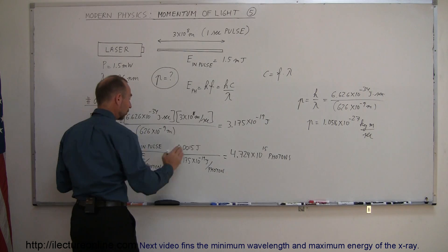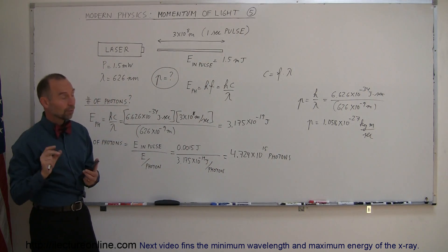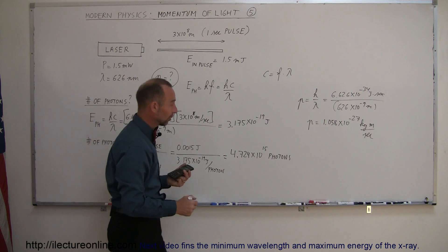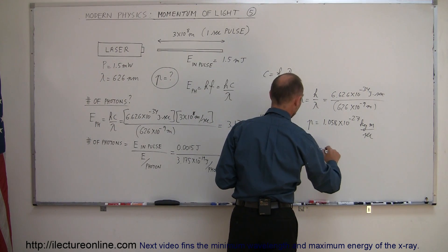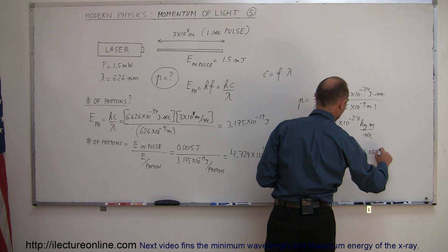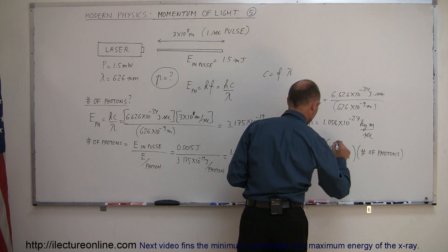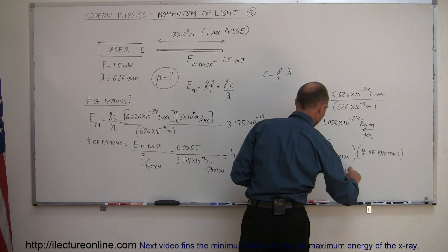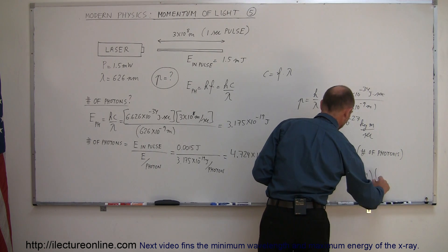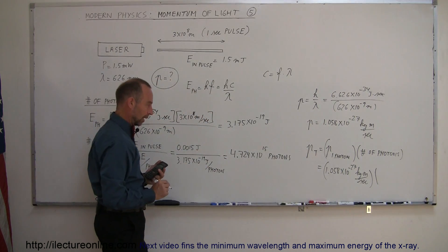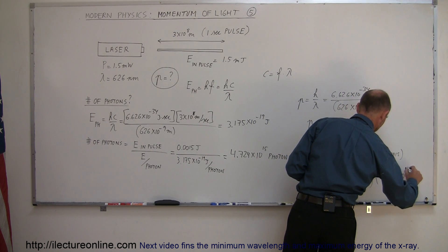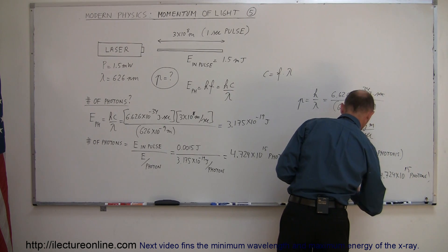We've calculated the number of photons in this one-second pulse from the laser and the momentum for each photon. All we have to do now is multiply the momentum of each photon times the number of photons. So p_total equals the momentum per photon times the number of photons: 1.058×10⁻²⁷ kg·m/s multiplied by 4.724×10¹⁵ photons.